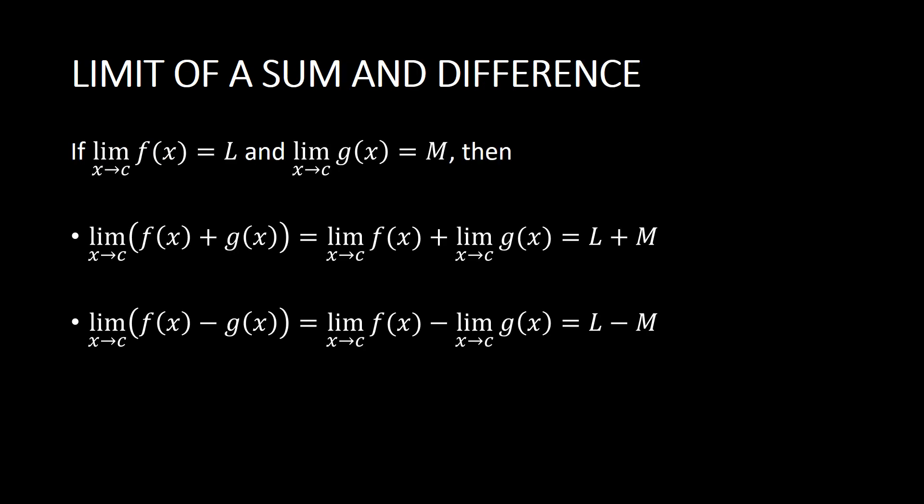For the limit of sum and difference: if the limit of f(x) as x approaches c equals L, and the limit of g(x) as x approaches c equals M, then the limit of f(x) plus g(x) as x approaches c is equivalent to the individual limits added together. So we have the limit of f(x) as x approaches c plus the limit of g(x) as x approaches c, which equals L plus M.